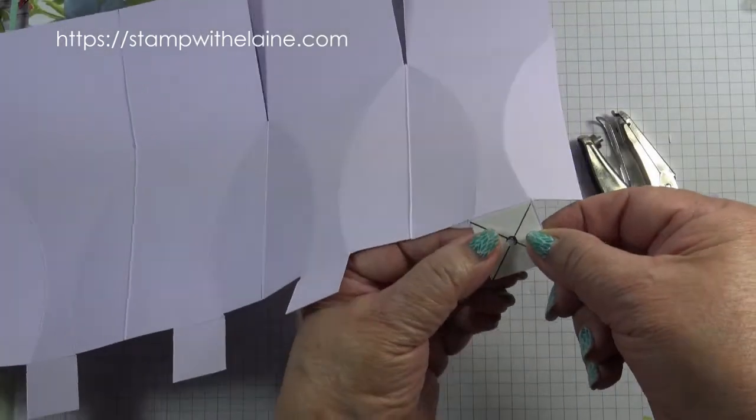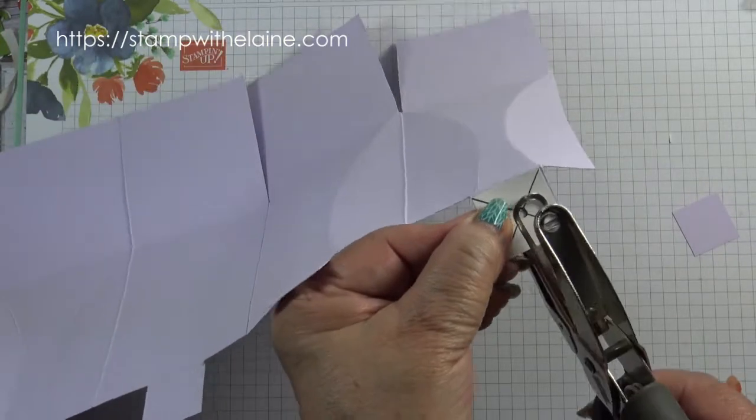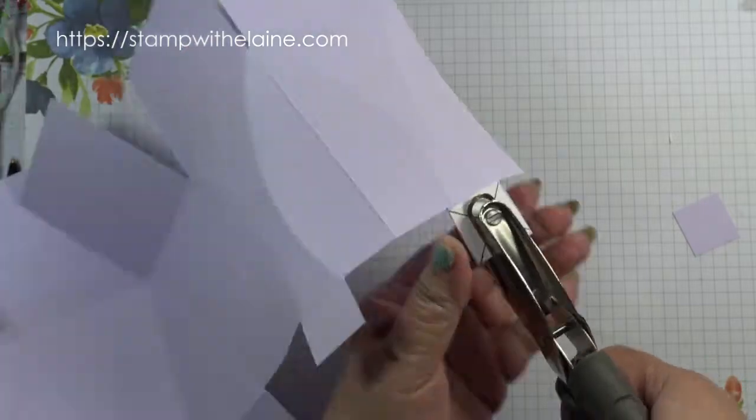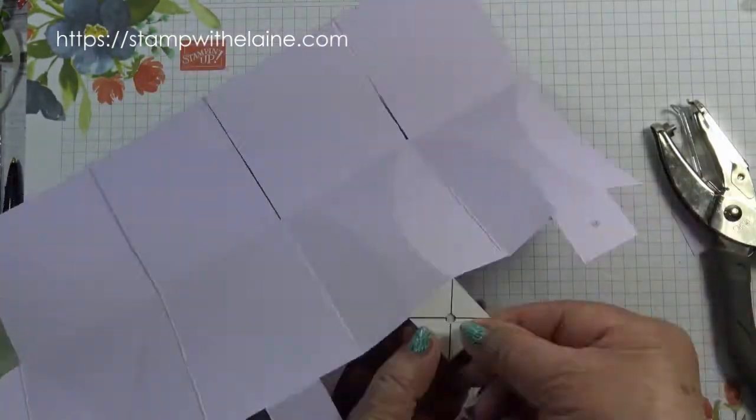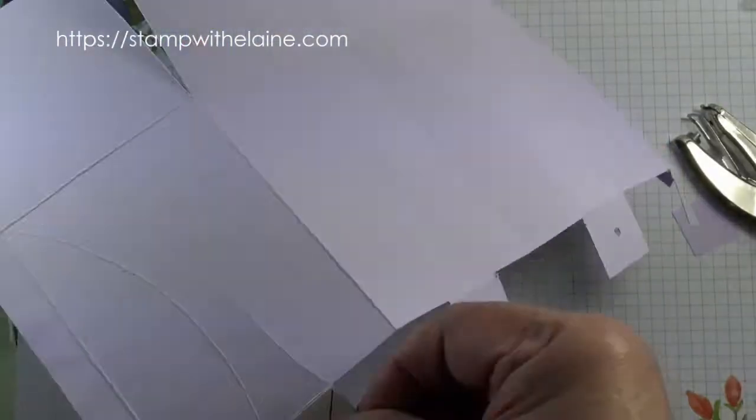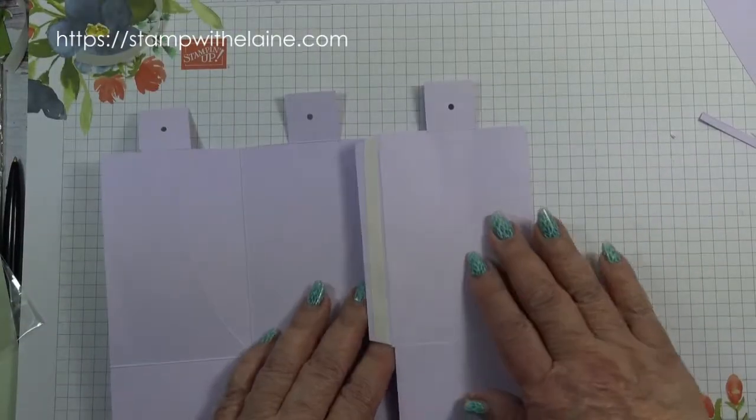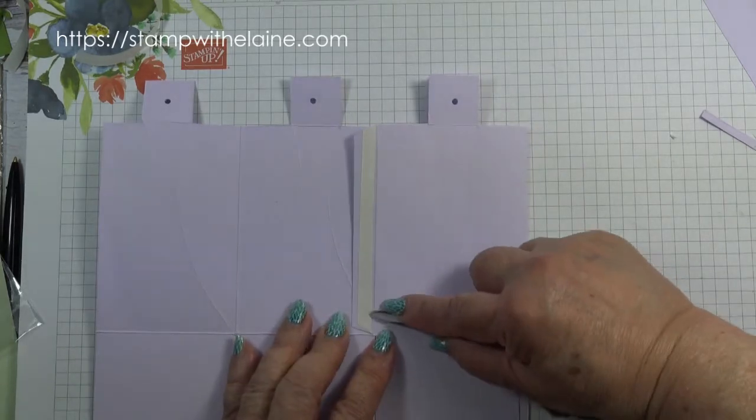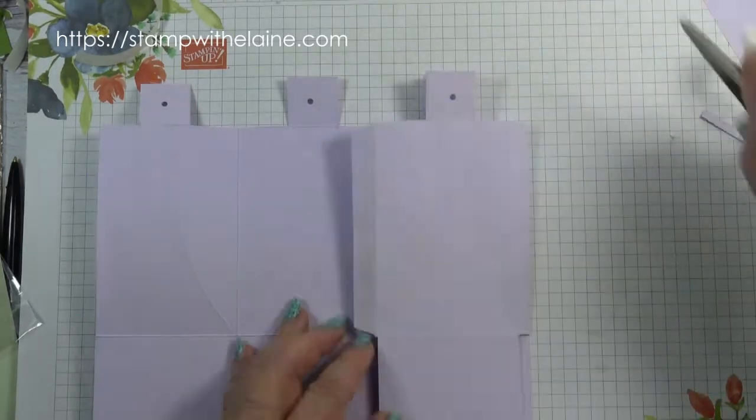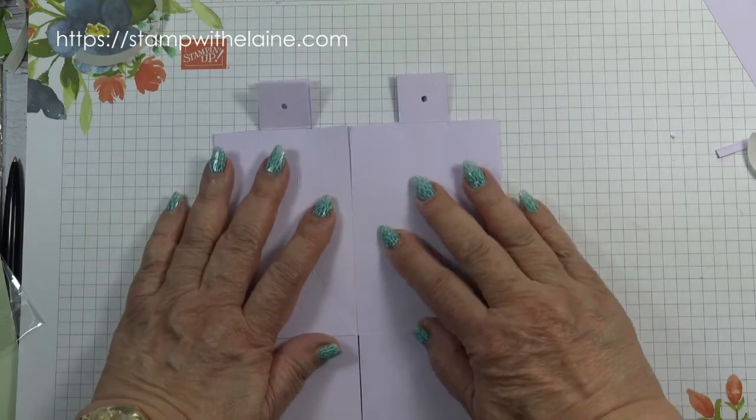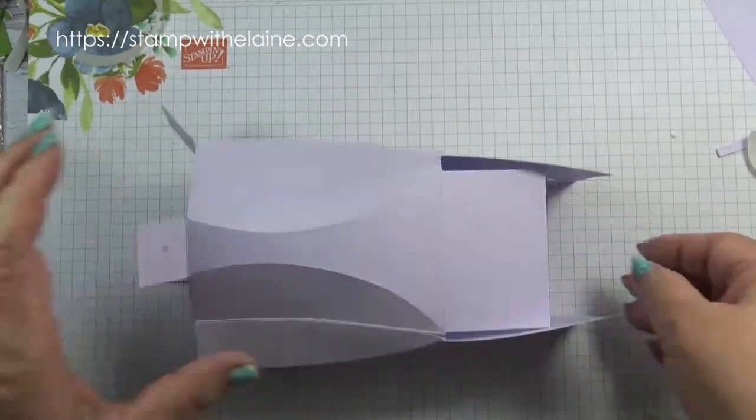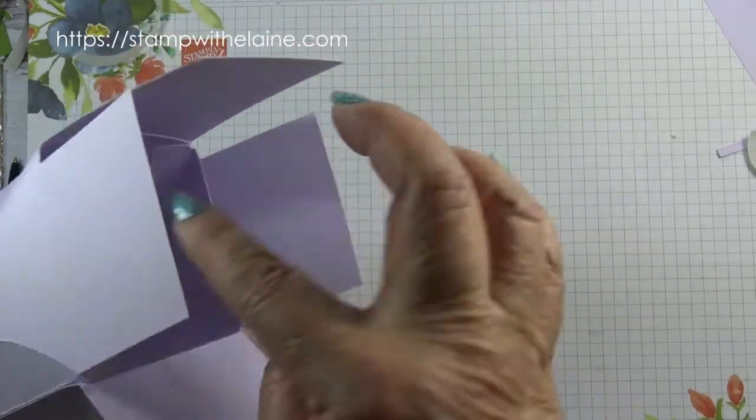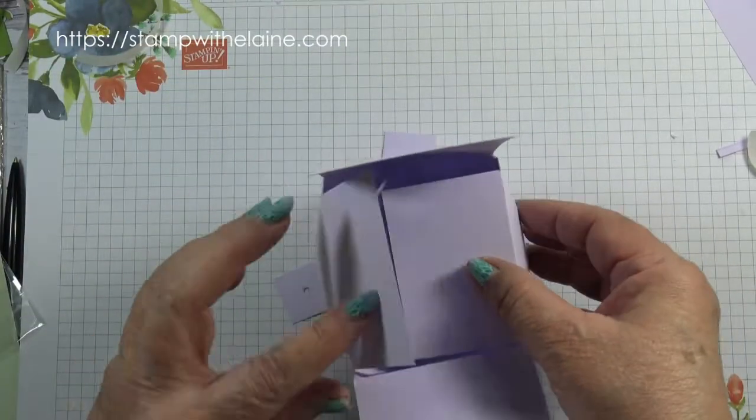Now you can join the box together. Just fold this bit over, remove the tape, and put that over the top. I forgot to say that you have to take two of the flaps and just cut off a little bit.